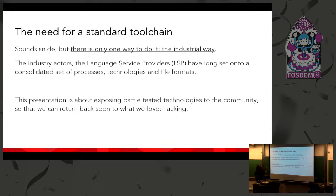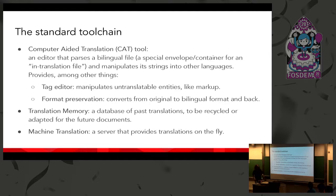This presentation is about exposing battle-tested technologies to the community so we can return to what we love — hacking — not coming up with new ways of translating software. The standard toolchain for translation starts with a CAT (computer-aided translation) tool, which is an editor that parses a bilingual file. A bilingual file is an envelope container representing a file in the process of being translated. You put the file in this envelope, everything is extracted, and you can manipulate the strings — buttons, labels, menu voices, even a simple docx document — into other languages.